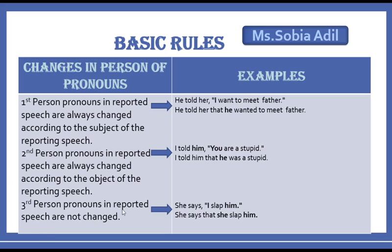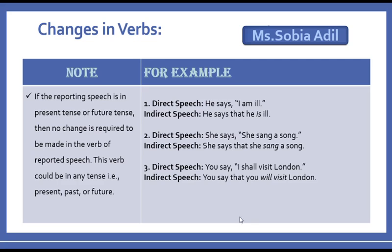Third person pronouns in reported speech are not changed while converting direct to indirect speech. For example: 'She says, I slap him.' Here 'him' is a third person pronoun — it will never be changed. The first person 'I' changes according to the subject of the reporting speech, but 'him' stays. So: 'She says that she slapped him.'